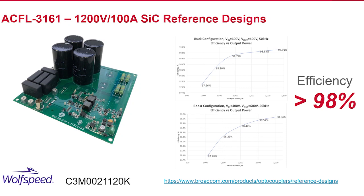Looking at a specific reference design — the ACFL-3161, a new 10-amp gate driver which can be used for both silicon carbide and GaN. The reference design shown is for a 1200-volt, 100-amp silicon carbide design. It is a half-bridge evaluation board featuring a Wolfspeed silicon carbide MOSFET (part number C3M0021120K), using two single-channel ACFL-3161 devices to drive both the top and bottom bridge of the silicon carbide MOSFET.